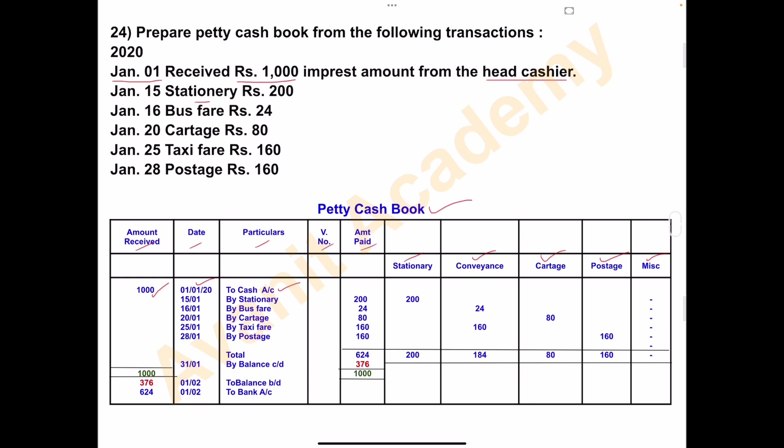Next, on January 15th, stationery Rs. 200. In the date column write January 15, particulars: stationery. Amount paid column: write 200. In the stationery analysis column, write 200. Other columns are nil.